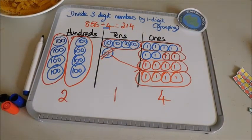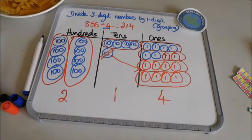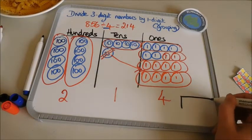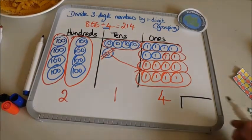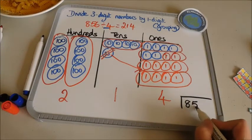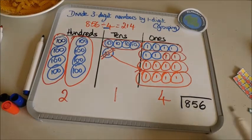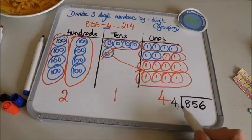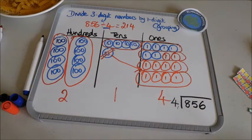Now when the children are ready they can then use a more formal method. So if I look down here at my more formal method I've got my 856 and I'm going to divide that by four. The children call this bus stop method, but it's our formal short division.